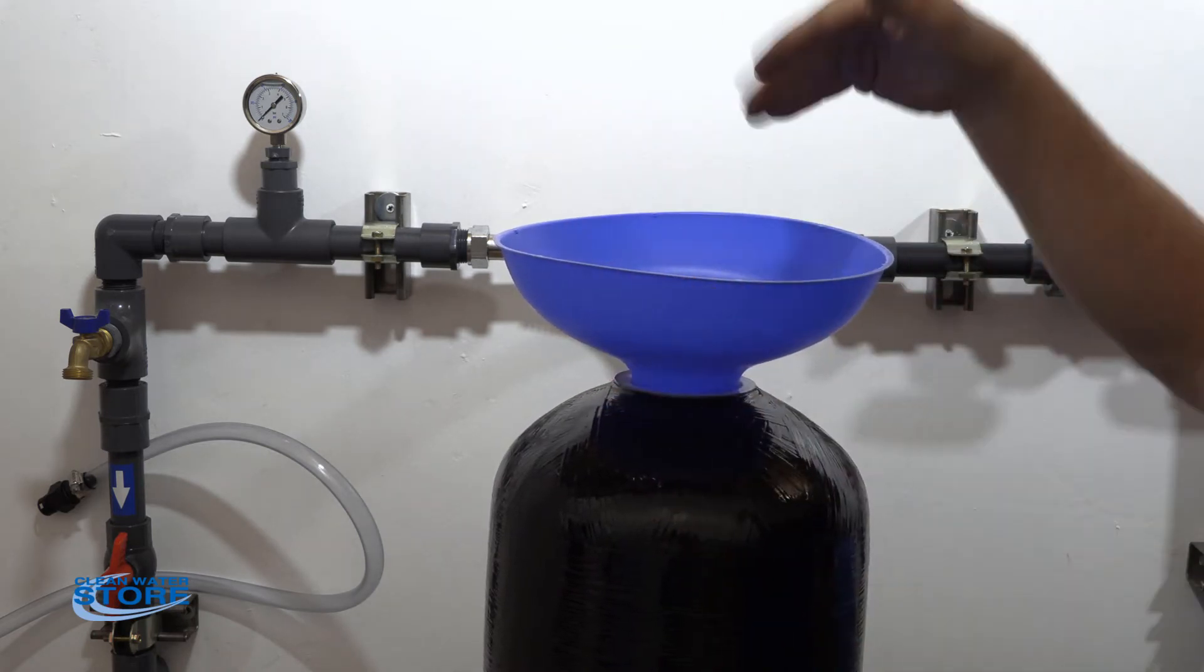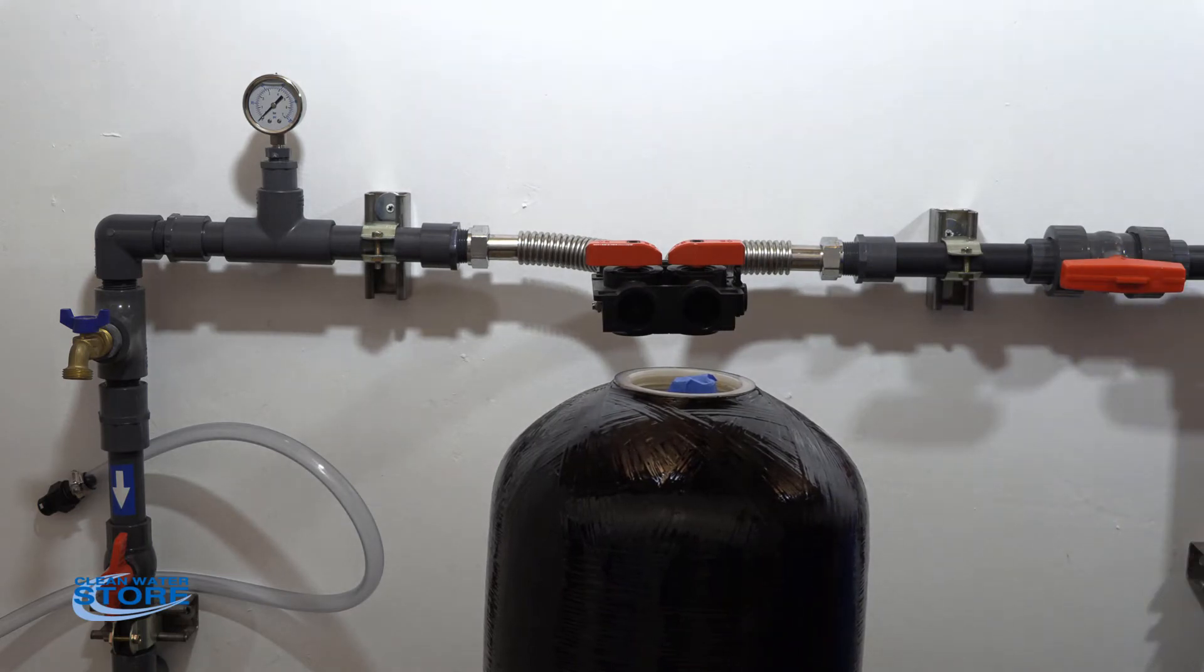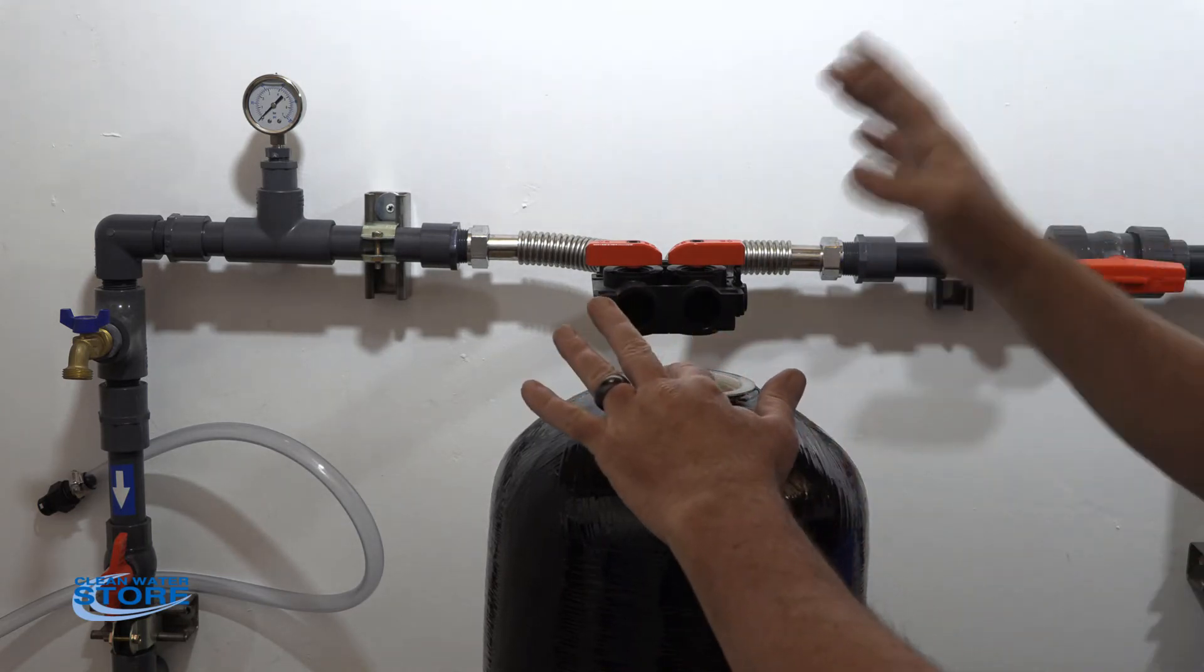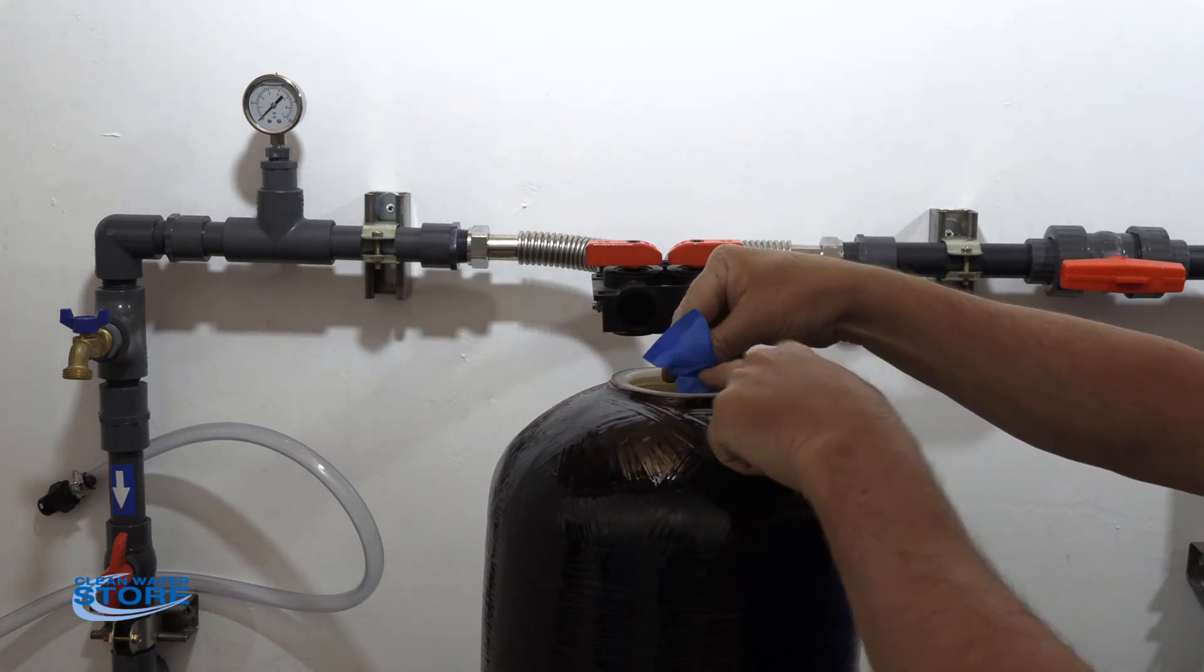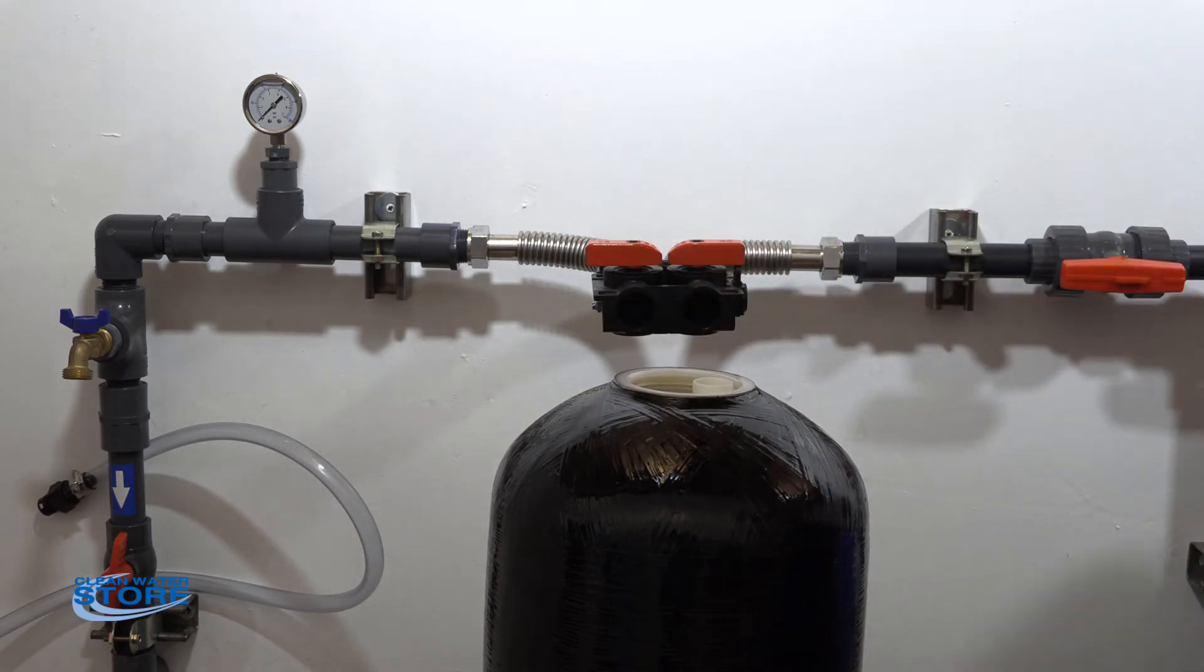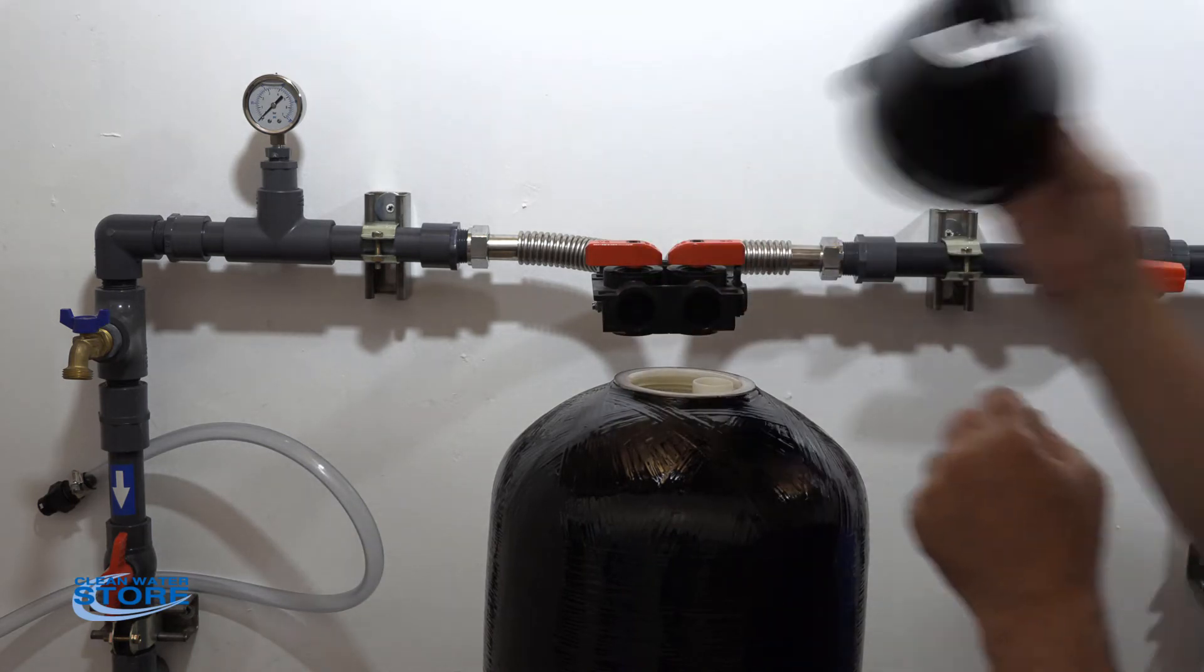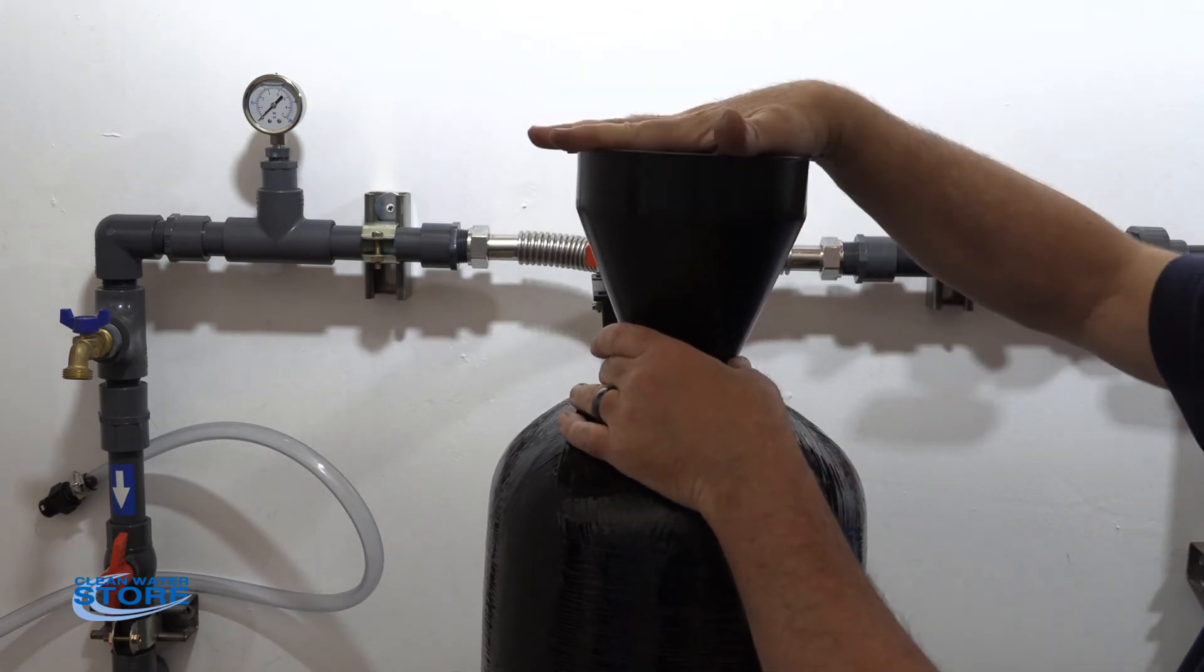For this demonstration, we're going to go ahead and use the black funnel since we have it. Again, if you use the blue funnel and you're removing it, have your finger on top of that D-tube before you pull the tape up so you don't pull that D-tube up out of there. And again, the black funnel, get a little tab there, pop it on like that.